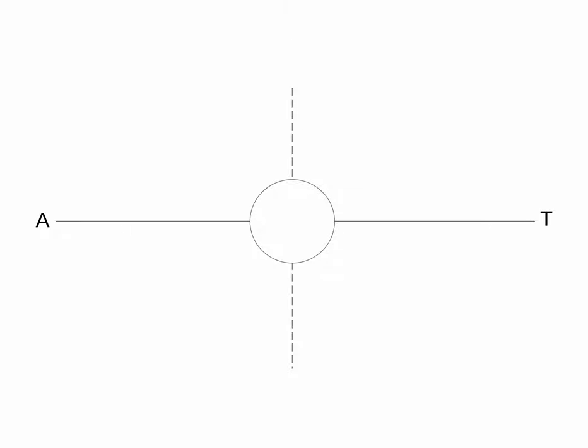The standard ACT matrix consists of two intersecting lines. The vertical line is the distinction between inner and outer experience. The horizontal is the distinction between moving toward who and what matters to us, and away from unwanted or uncomfortable inner experience.